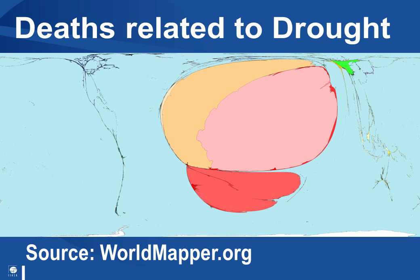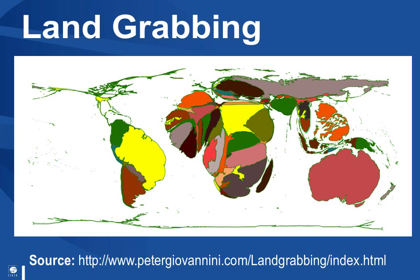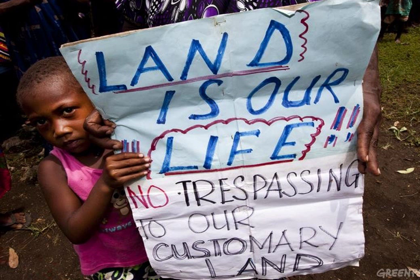But drought is not the only driver of food insecurity. Another factor that could radically affect the local livelihoods of farmers is land grabbing. This representation of the world captures the situation and shows that Africa is a prime focus of this phenomenon. Land grabbing is the large-scale acquisition of land by domestic and international companies, governments, and individuals.